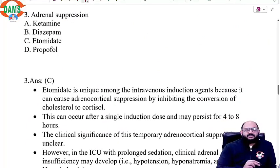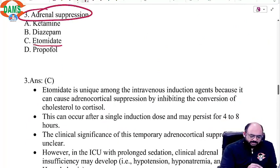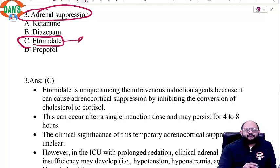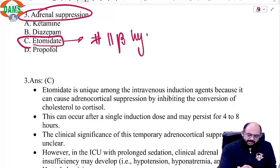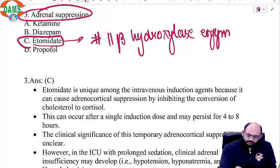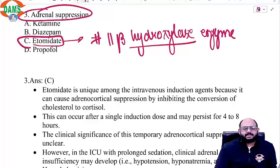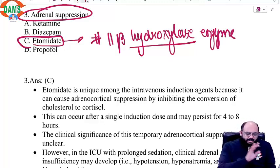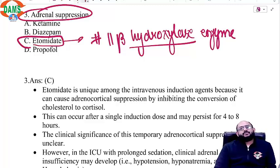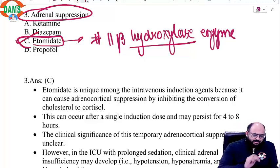Next: adrenal suppression — a fact-based question. We know adrenal suppression is a direct side effect of etomidate by inhibiting the 11-beta hydroxylase enzyme. Because of this inhibition of 11-beta hydroxylase, it causes adrenocortical suppression. Therefore, you should not use etomidate in long-term ICU sedation/intubations. The correct answer is etomidate.